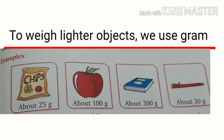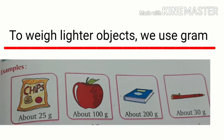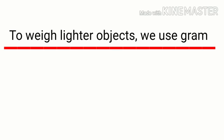To weigh lighter objects, we use the unit gram. See here example students. The packet of chips is about 25 gram. An apple's weight is about 100 gram. A copy weighs about 200 gram. And the weight of a pen is about 30 gram. To weigh lighter objects, we use the unit gram.